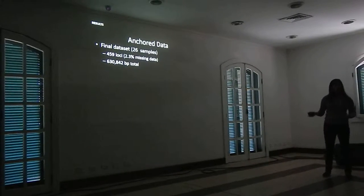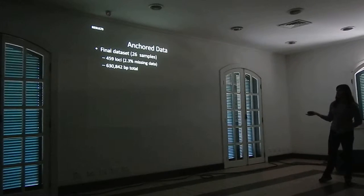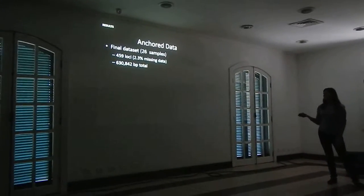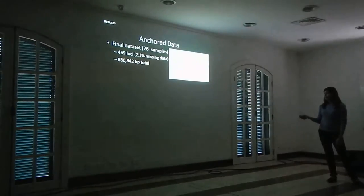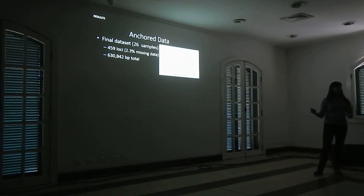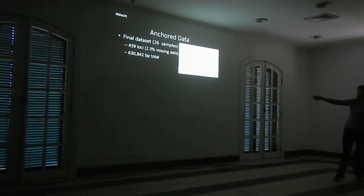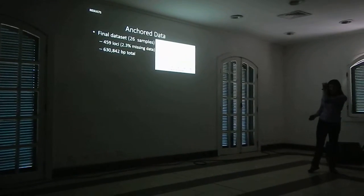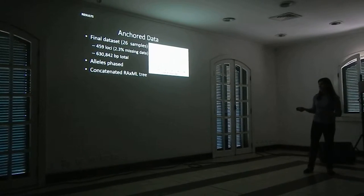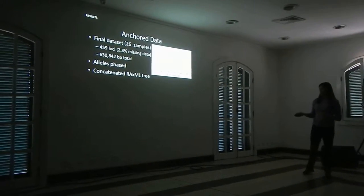For the anchored data, all 26 samples were retained, yielding 459 loci with only 2.5% missing data, averaging 630 base pairs. The locus length ranged from short anonymous loci all the way up to 2,500 base pairs including the conserved amphibian probe kit. These were phased alleles, so each individual is represented by two sequences, and this is the concatenated RAxML tree showing the overall phylogenetic structure.